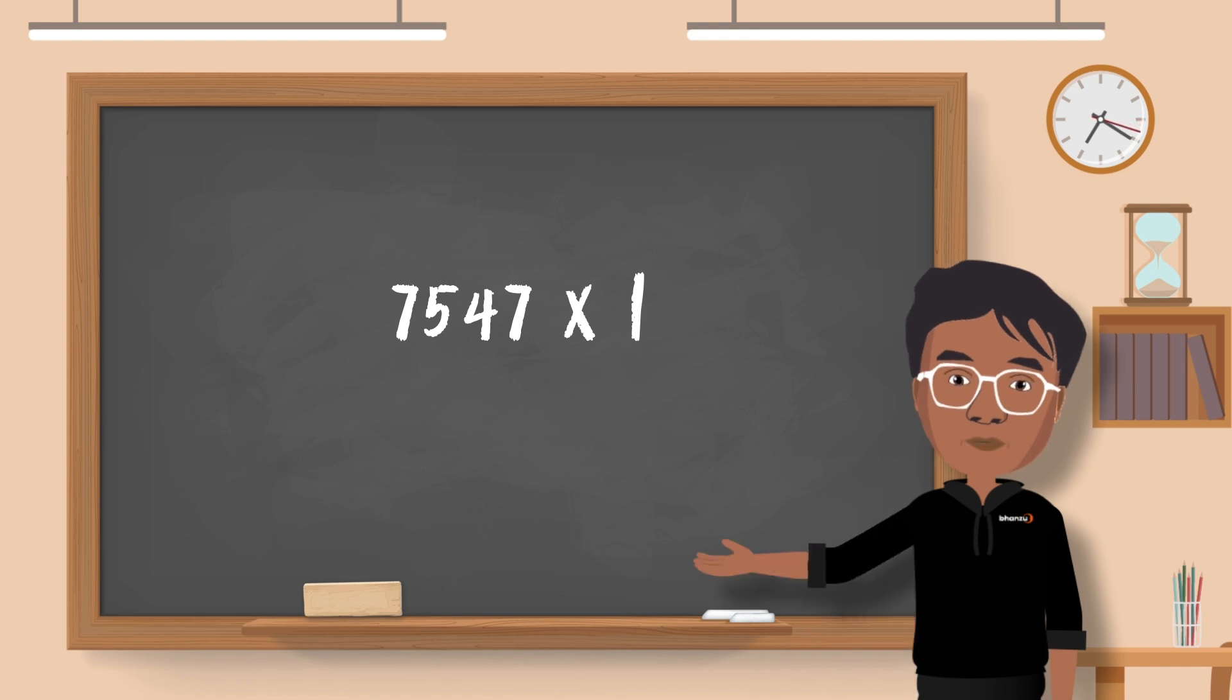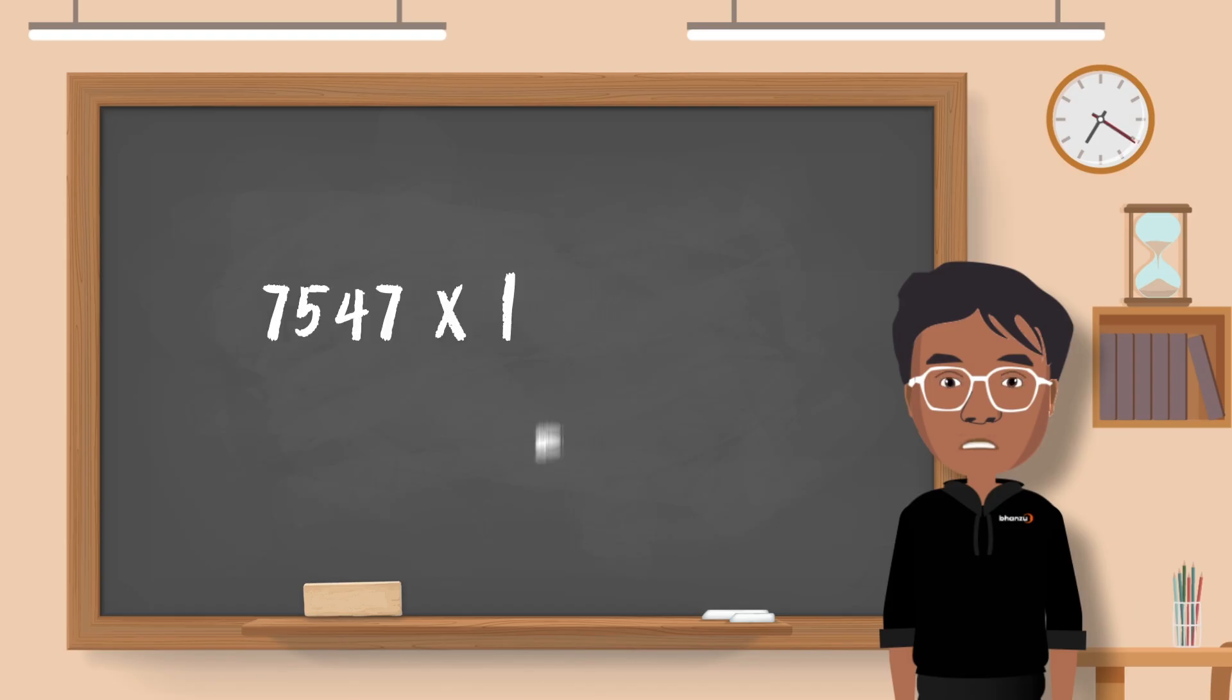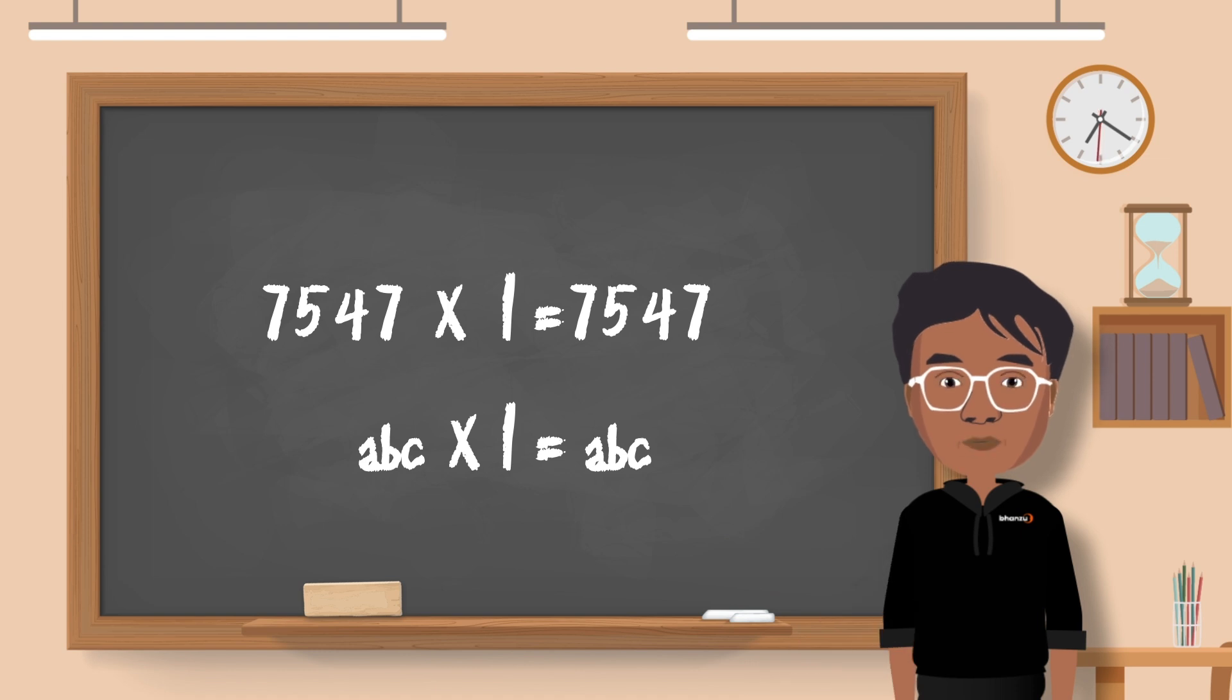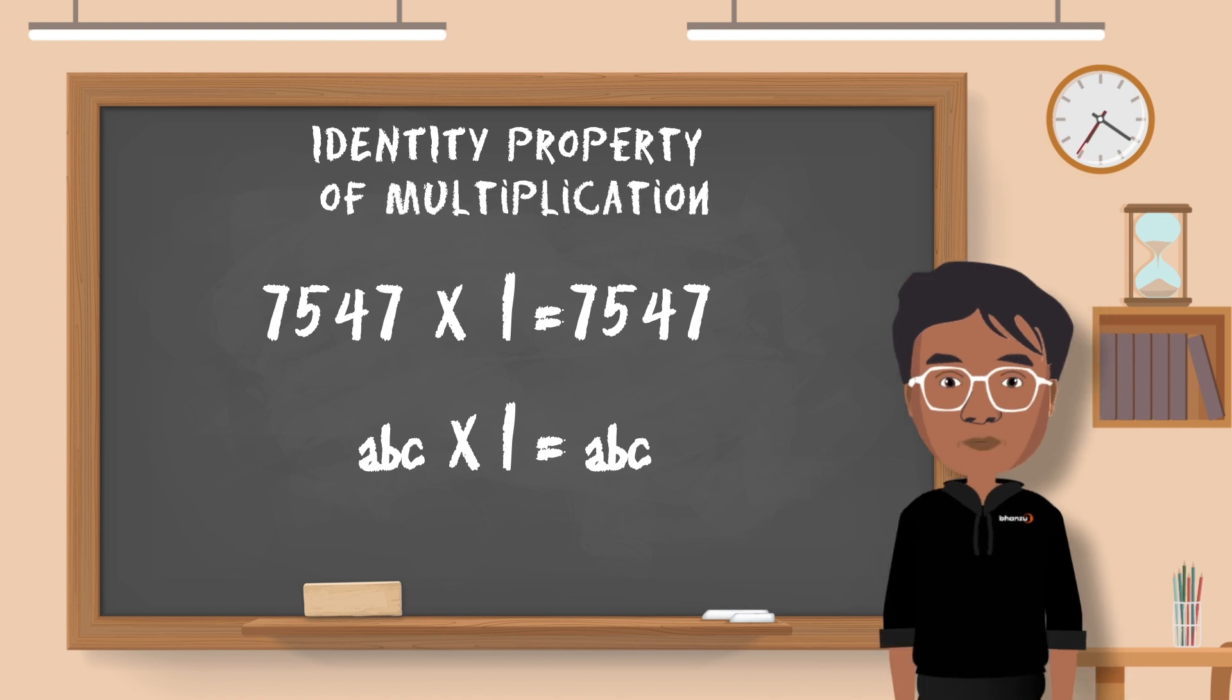That was a trick question. The answer is 7547 itself. Do you know why? Any number multiplied by 1 is that number itself. This property is called the identity property of multiplication, which claims that any number multiplied by 1 is that number itself.